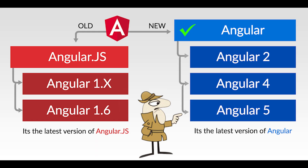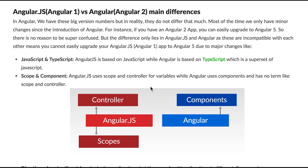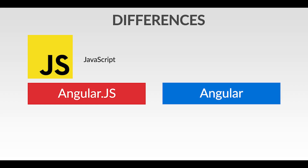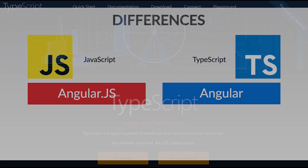Now you know about the versions of AngularJS and Angular. Let's discuss some main differences between them. The first difference is JavaScript versus TypeScript — AngularJS uses JavaScript while Angular uses TypeScript. If you'd like to learn about TypeScript, you can head over to the link provided.